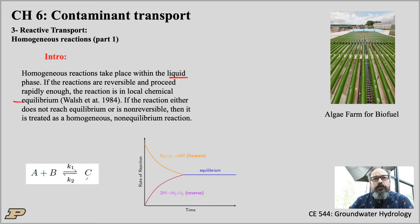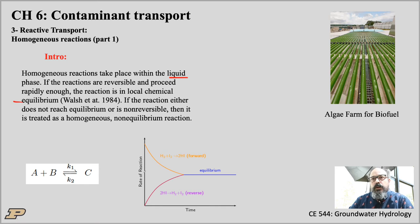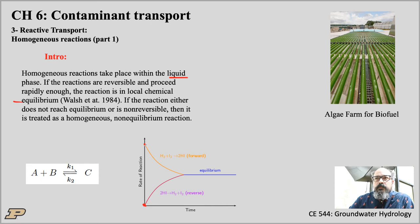The reaction proceeds at some rate K1 to the right, and C dissociates back into A and B at some rate K2. If you put A and B together in a beaker, early on there is a forward reaction — A plus B goes to C — and some backward reaction where HI dissociates into H₂ and I₂. At some point, the species reach equilibrium and the rate of the reaction becomes constant.